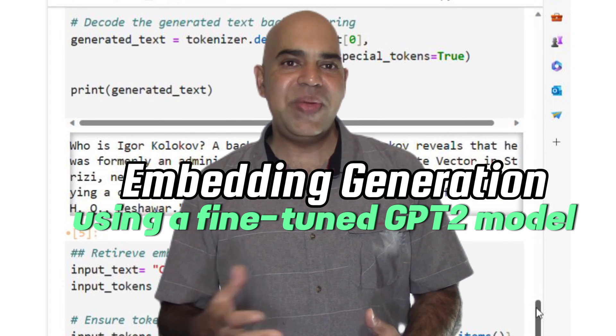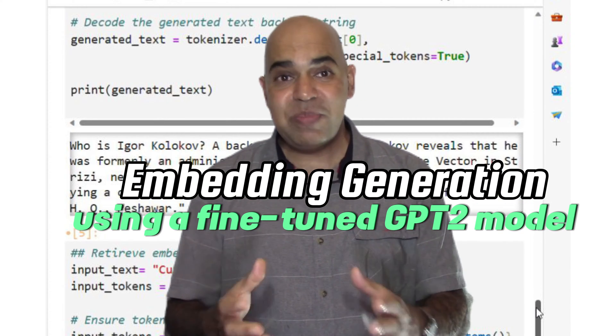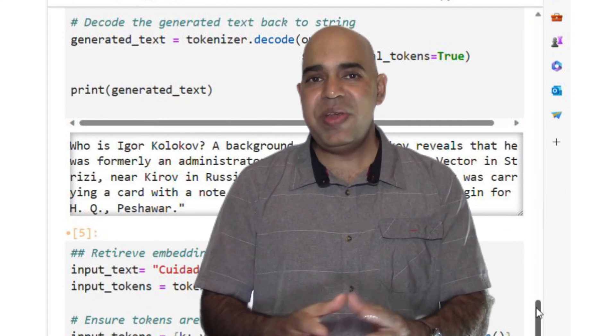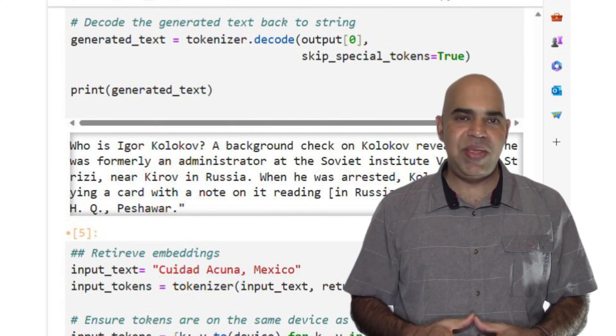Now let me show you how you can retrieve embeddings from GPT-2. We have our fine-tuned model. We can generate embeddings for any text we want.